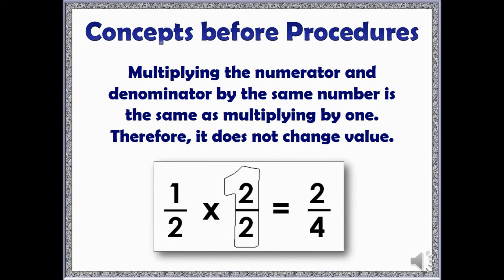Once students have adequate experiences using models to recognize and build equivalent fractions, then the procedure for finding equivalent fractions can finally be introduced. As you explain that multiplying one-half by two-over-two creates an equivalent fraction without changing the value, it may be helpful to draw the number one around two-over-two as a reminder of its value and also as a reminder of the identity property.